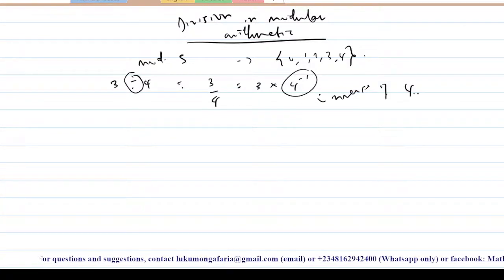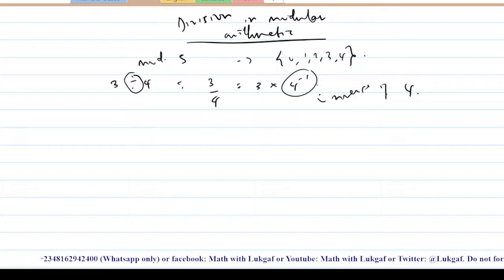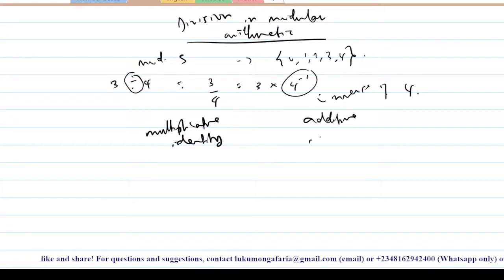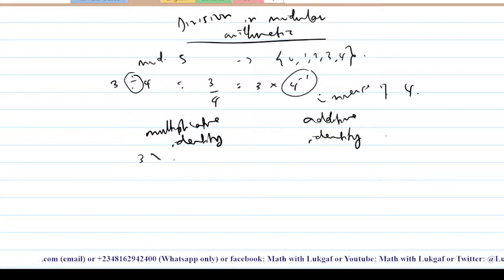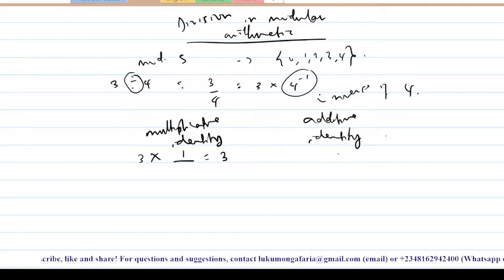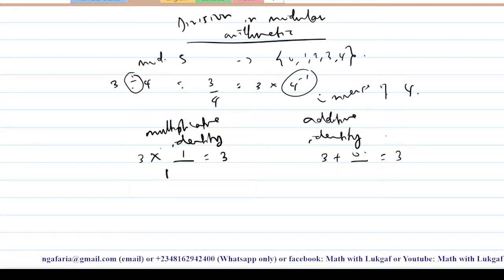So what do we understand by inverse? Let me quickly explain. Think about the concept of identity. Remember in ordinary numbers we have multiplicative identity and additive identity. Multiplicative identity is what you multiply by a number to get that number again — that number is one. Likewise, for additive identity, what you add to a number to get that number back is zero. So one is the multiplicative identity and zero is the additive identity.